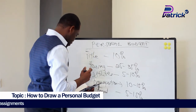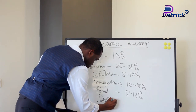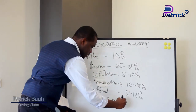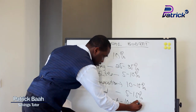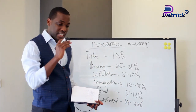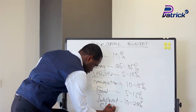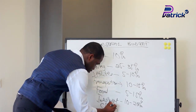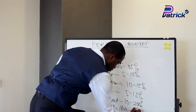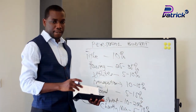Then we have investment or savings — you should at least do between 10 to 20% of your income in an investment instrument or a savings account. Then you have charity or donation, which should be between 5 to 10% of your monthly income.